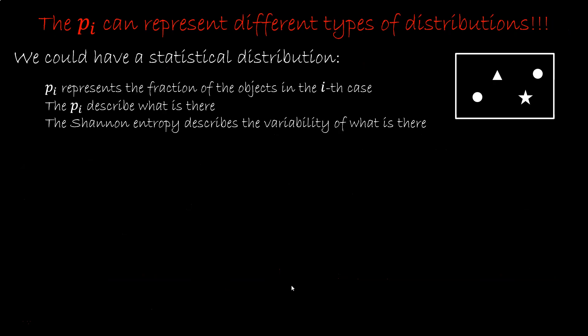We could have a statistical distribution. We actually have n distinct objects, each exhibiting a value of the property. So the PI represents the fraction of the objects in the ith case. For example, 66% of the atoms of the fluid are hydrogen.